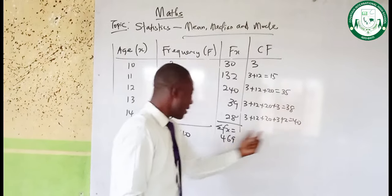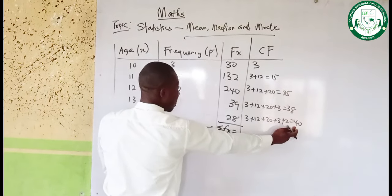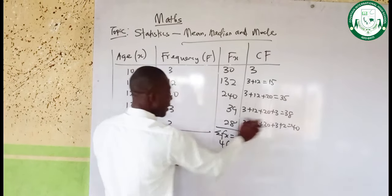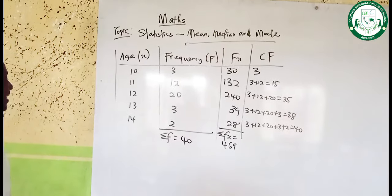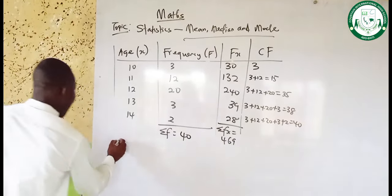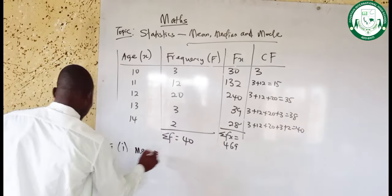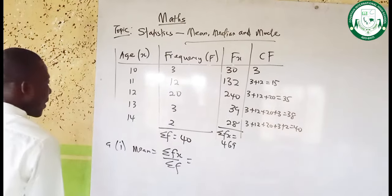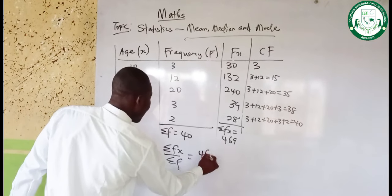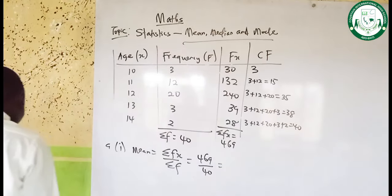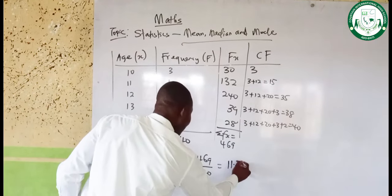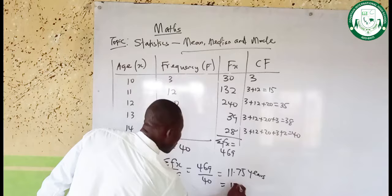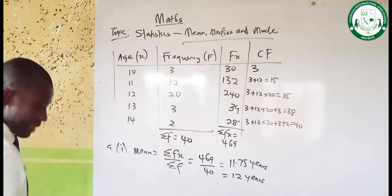The final value of cumulative frequency, which is 40, should be equal to our summation F of 40. If they are not matching, something went wrong with the addition. Since both are 40, there is no problem. Now, let's calculate the mean. Mean equals summation FX over summation F, which is 469 divided by 40. This gives us 11.75 years. Rounded to the nearest whole number, that gives us 12 years. So our mean is 12 years.